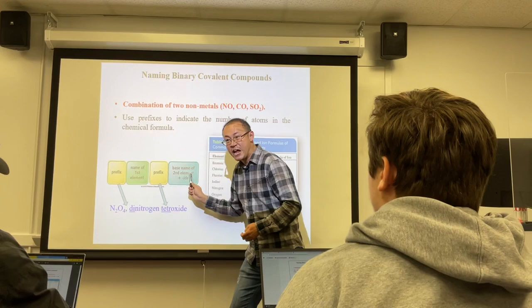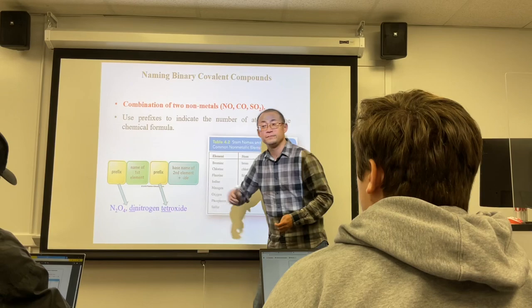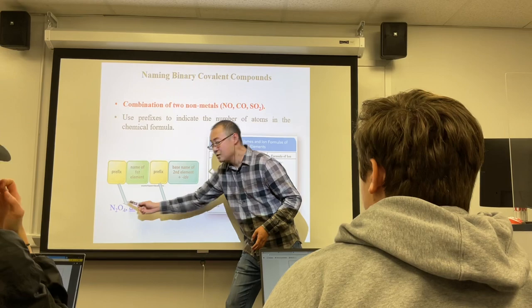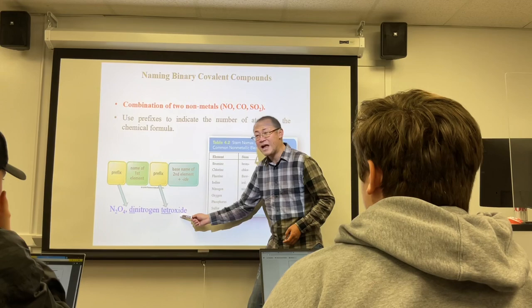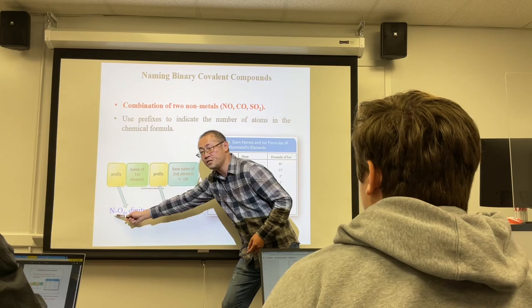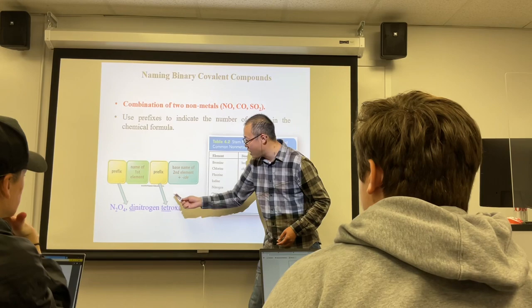An important exception: when mono- appears at the beginning of the first element's name, we do not use it. For example in CO, we don't say 'monocarbon monoxide' — we just say 'carbon monoxide.' Similarly for phosphorus pentoxide (P₂O₅), there is no 'mono' before phosphorus. Also, when a prefix ends with a or o and the element name begins with a vowel, the final vowel of the prefix is dropped — for example, 'tetraoxide' becomes 'tetroxide' because oxygen starts with 'o'.